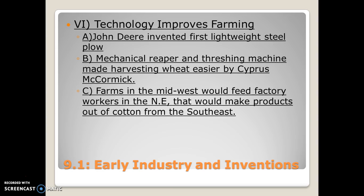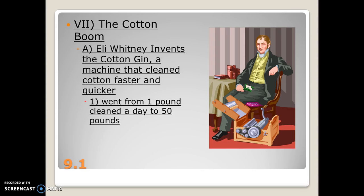This leads to the idea called the American System — the concept that every part of the United States is helping the other parts become successful. The North industrialized, the South produced cotton and cash crops, and the West served as the breadbasket, feeding the rest of the nation.